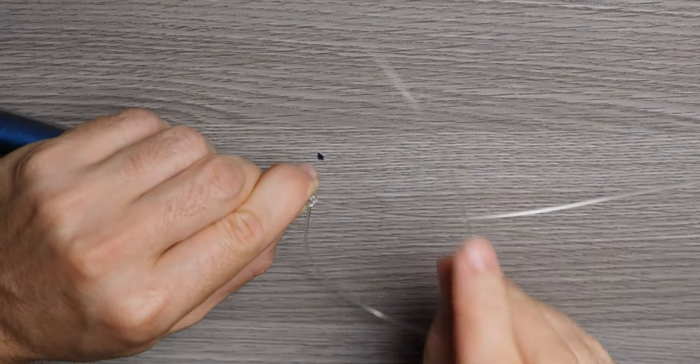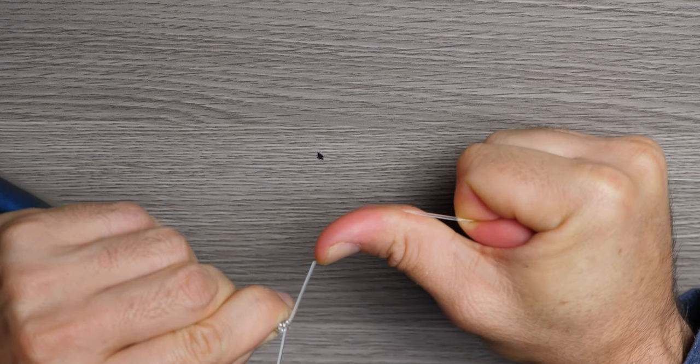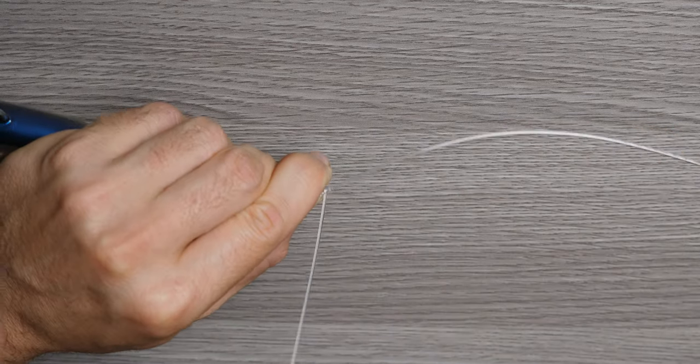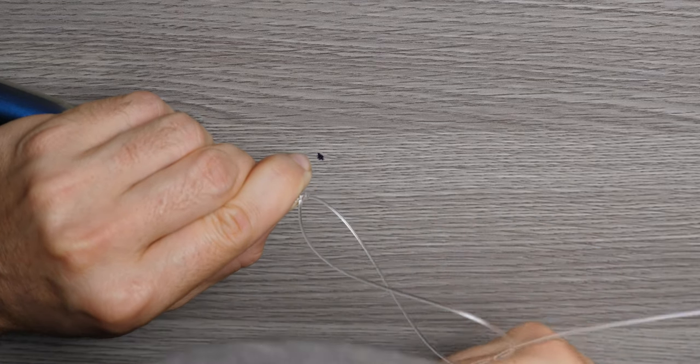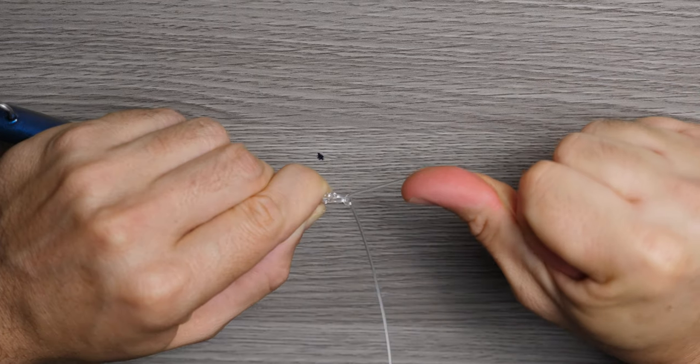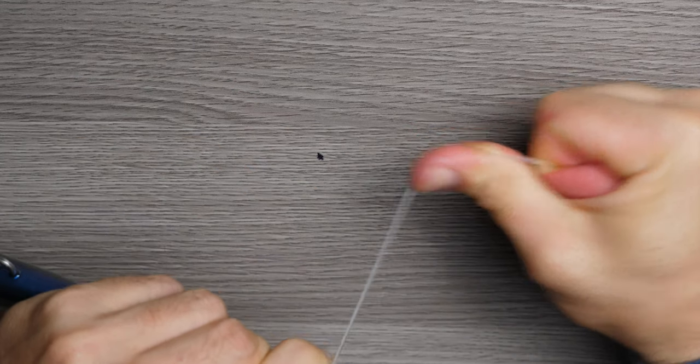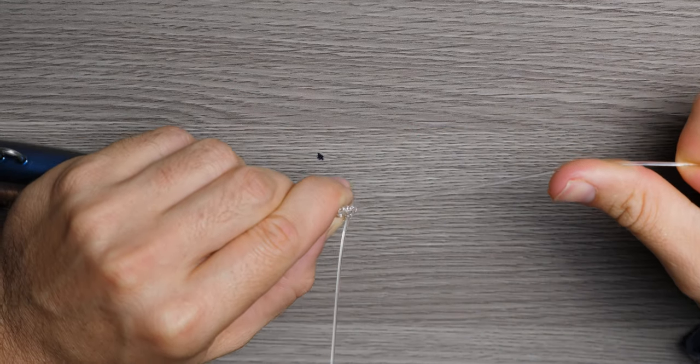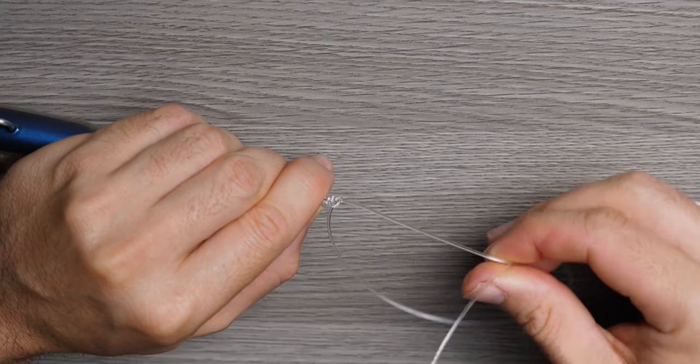And you're going to go over, under. Number three, grab it with your teeth, grab it with your pliers, whatever you have, pull it tight. Pull it tight again. And you're going to go under, over, and you're pulling that one nice and tight.